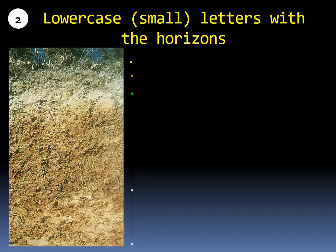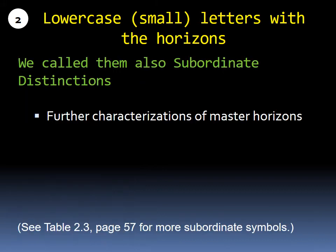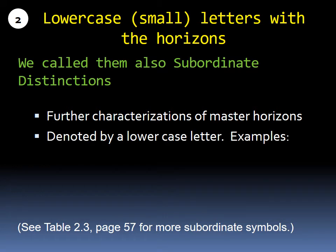Now we reach the last part of the lecture, which describes the lowercase or small letters that come with the horizon designations. Looking at this picture, you have four different layers: A horizon, E horizon, B horizon, and C horizon. But if you look at the B horizon, it's given a small letter T. These small letters are called subordinate distinctions. They add more information about the horizon — for example, T means accumulation of clay.